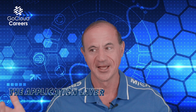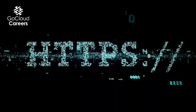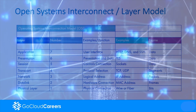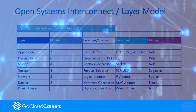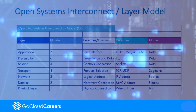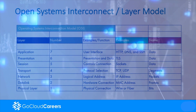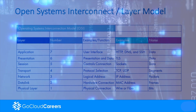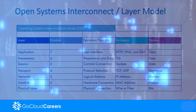Layer seven is the application layer — the applications that you and I use: web browser, HTTP, DNS, SSH. These are layer seven applications, and we're sending data. To recap: layer one, physical, wire, bits; layer two, data link, MAC address, frames; layer three, network layer, IP address, packets; layer four, transport, TCP/UDP/ICMP, segments; layer five, session, controls the connection, data; layer six, presentation, encryption, data; layer seven, application layer, user interface, data.